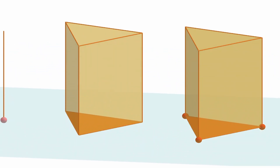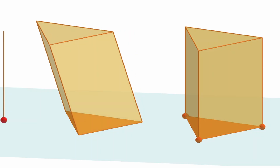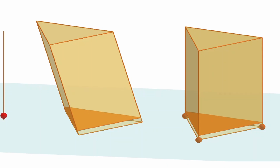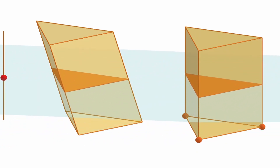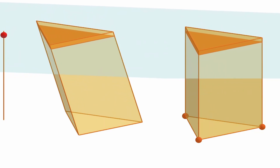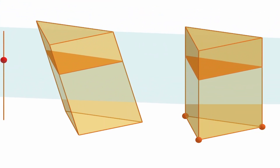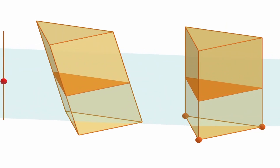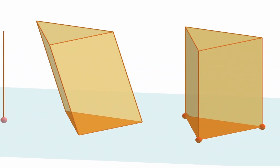But what would happen if we changed the shape of one of those solids? Let's make the left prism a little bit slanted. Do they still have the same volume? Notice that we have not changed the height, and when we consider this plane, the intersection on the solid on the left, even though it is slanted, is still the same as the intersections on the solid on the right throughout the whole height of both prisms. Therefore, they still have the same volume.